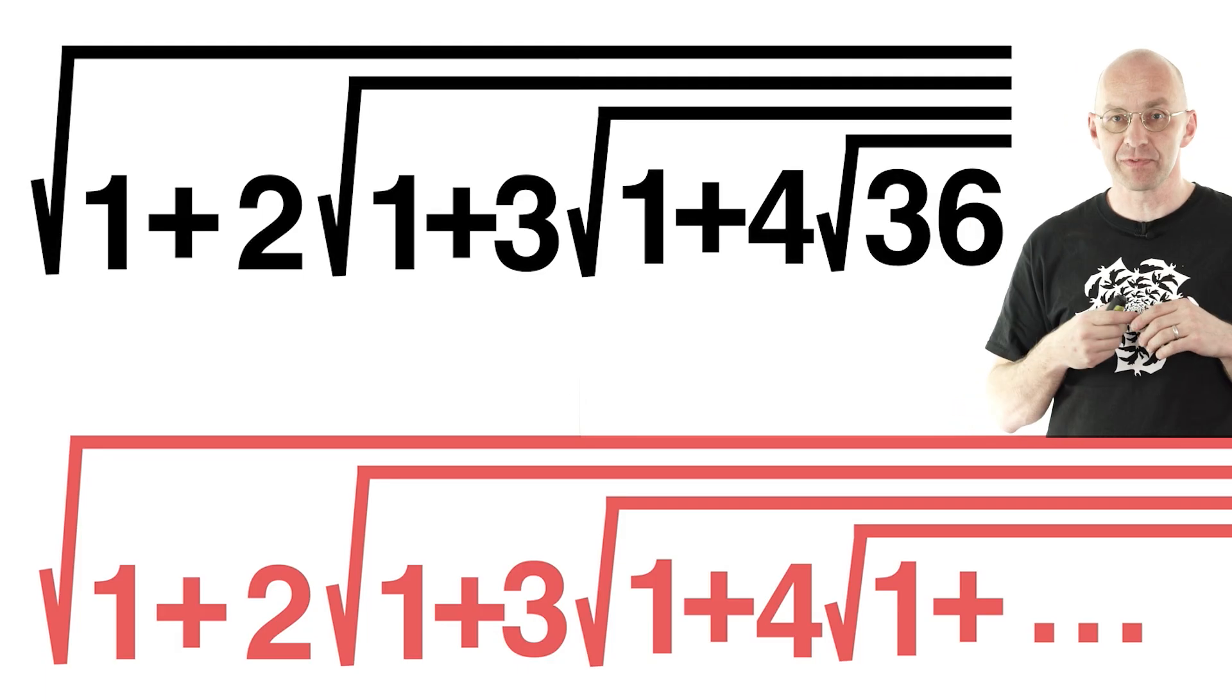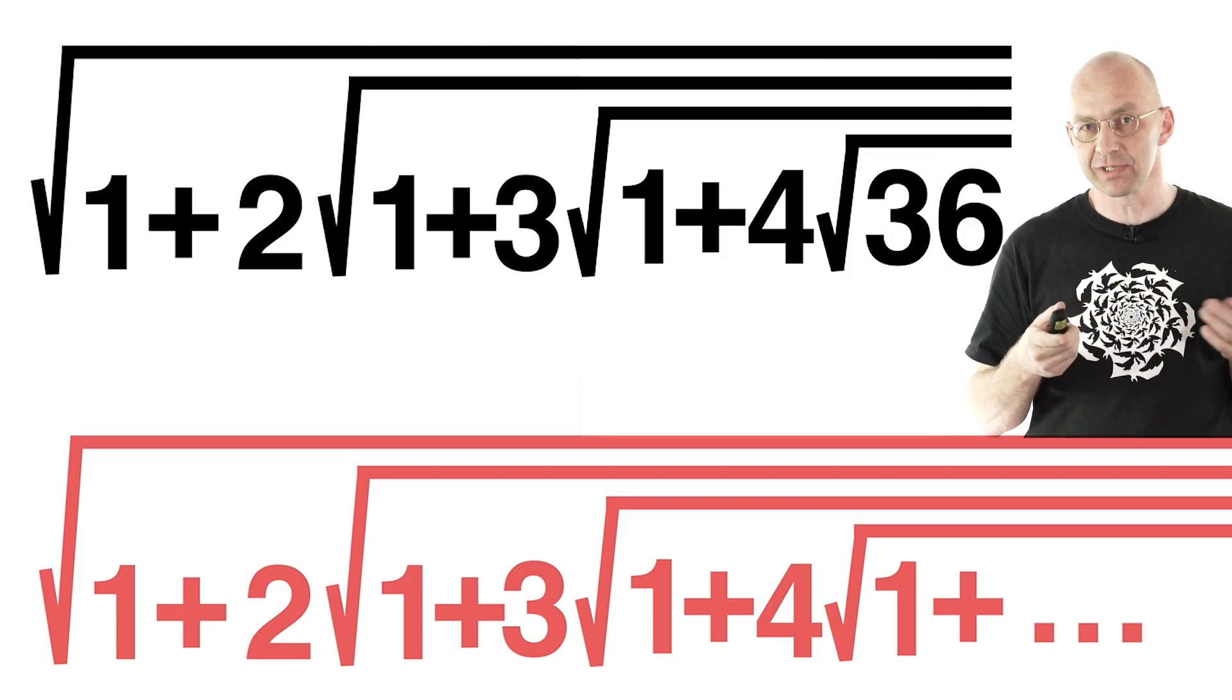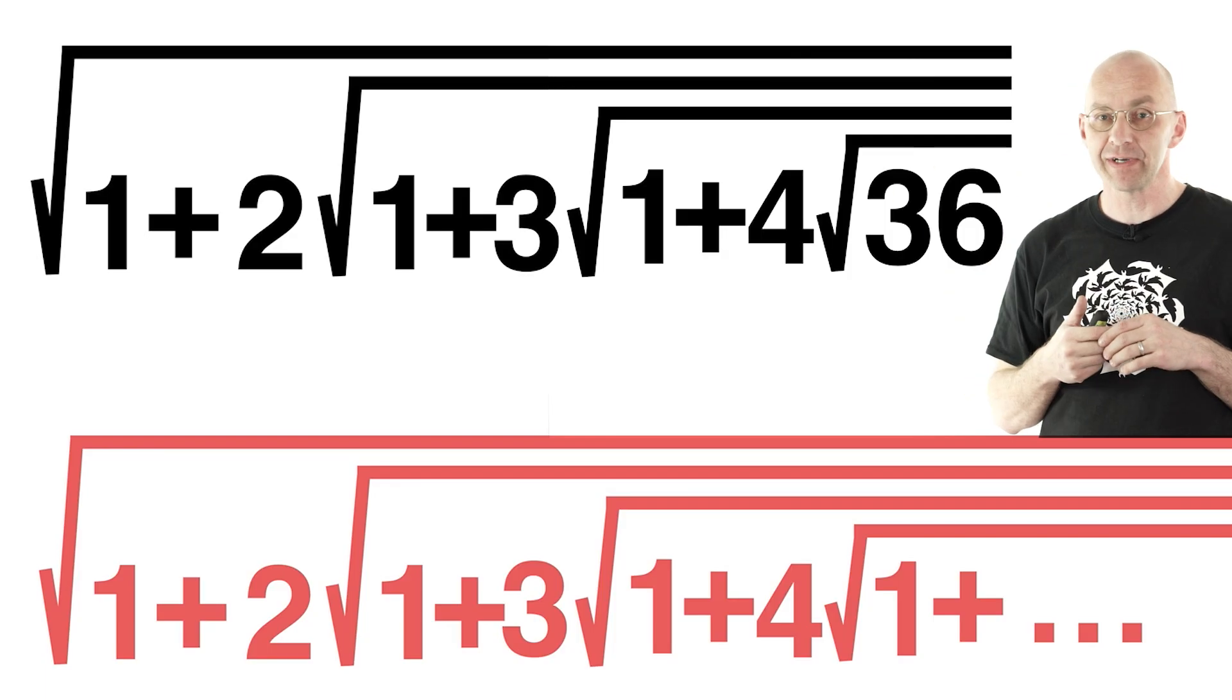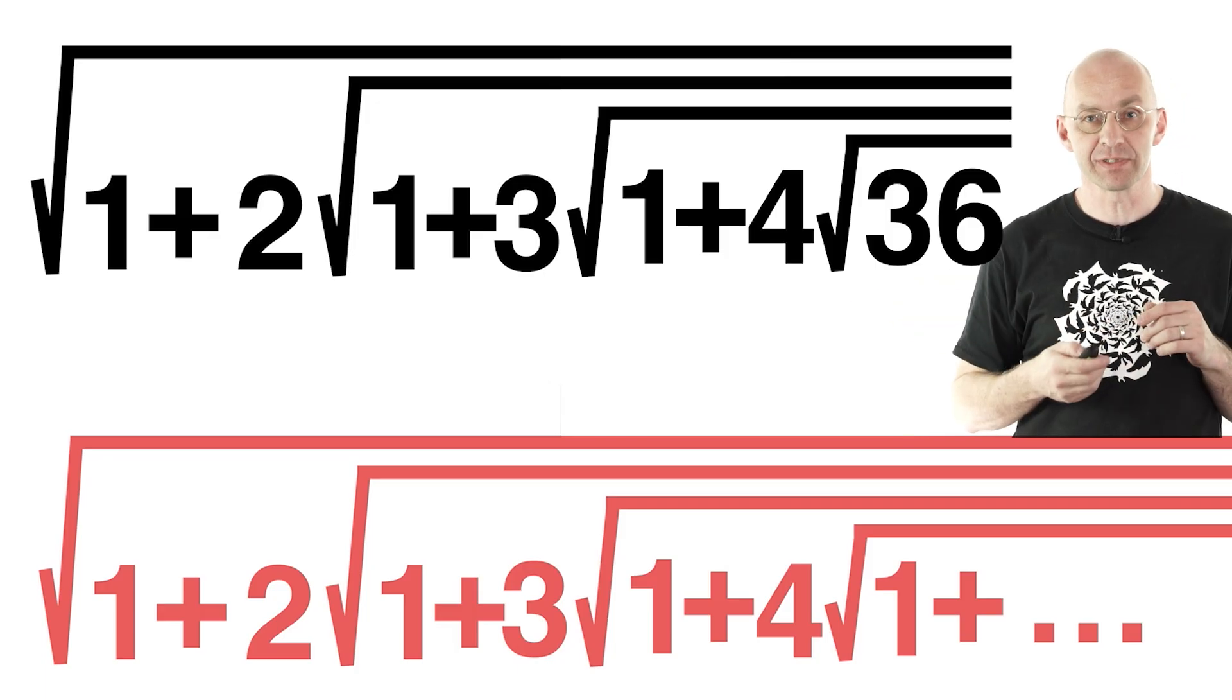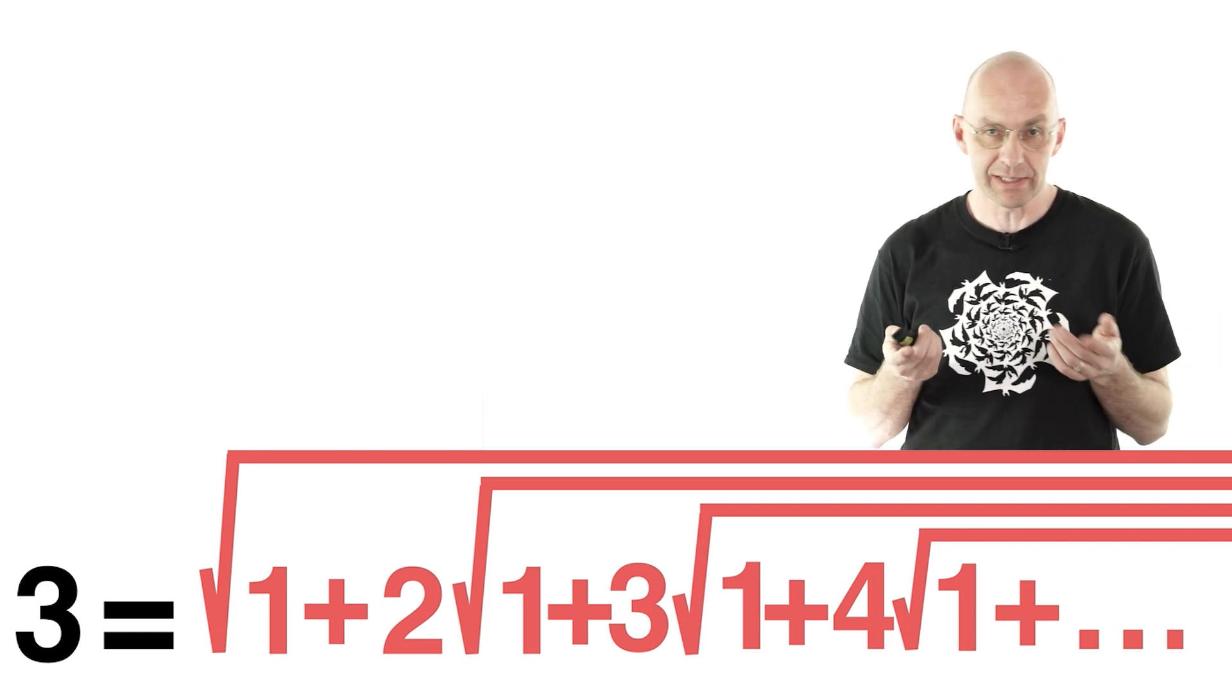All right. Now all these expressions that we've seen here, they're all equal to 3 obviously. And so since this continues on forever, he says, this shows that the infinite expression itself is equal to 3. And that sounds pretty convincing, doesn't it?